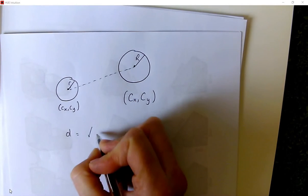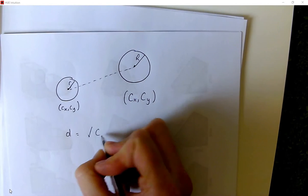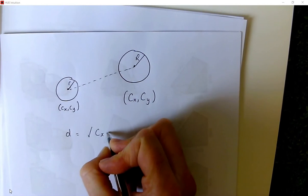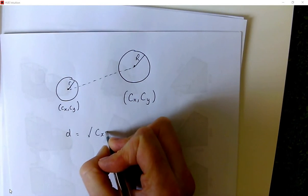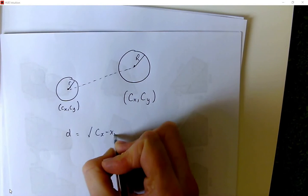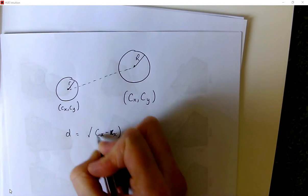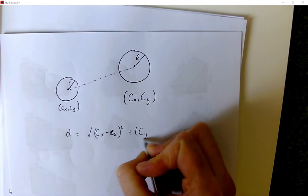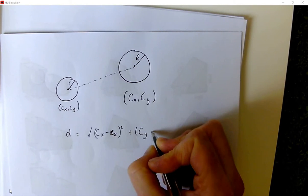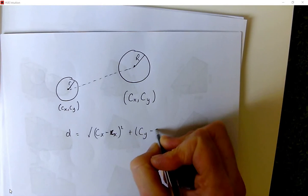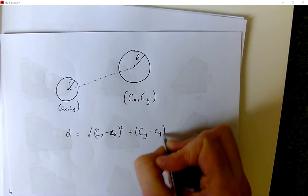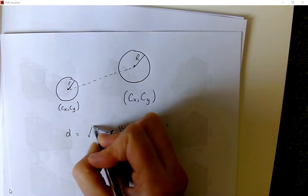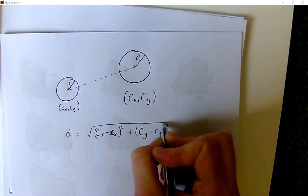So we've got the distance between the two x-coordinates, squared, and the distance between the y-coordinates of the centres, squared, and then square root.